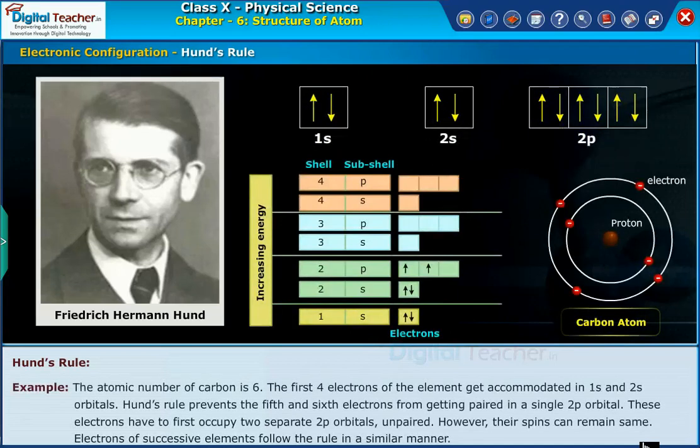Example: The atomic number of carbon is 6. The first four electrons of the element get accommodated in 1s and 2s orbitals. Hund's rule prevents the fifth and sixth electrons from getting paired in a single 2p orbital. These electrons have to first occupy two separate 2p orbitals unpaired.